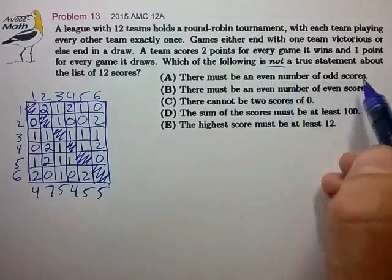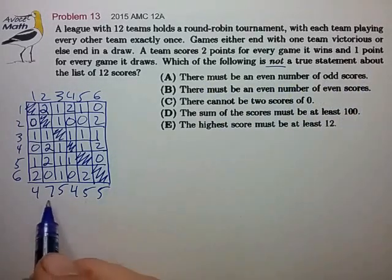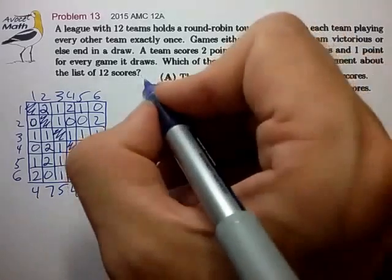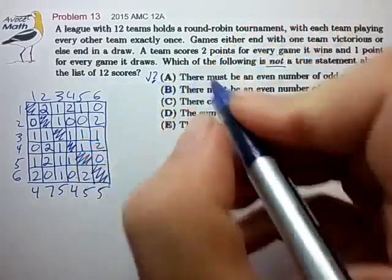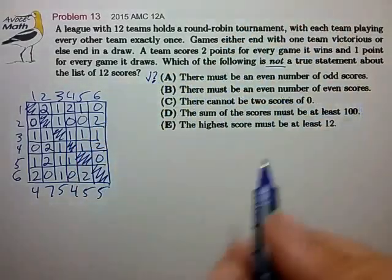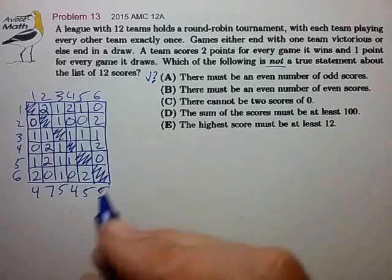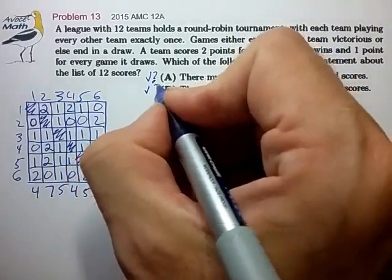There must be an even number of odd scores. That seems to be true, so let's call this tentatively correct. There must be an even number of even scores. In this example, that's also true. Let's call that tentatively correct.